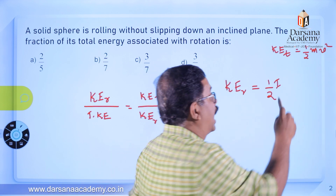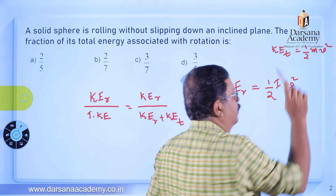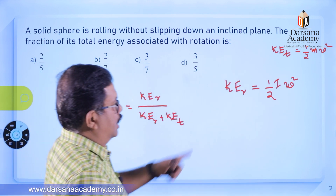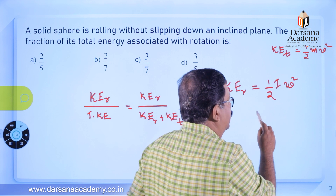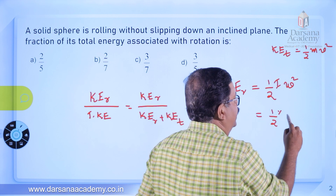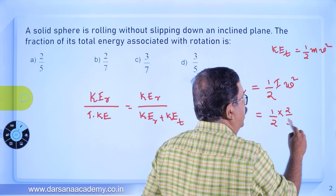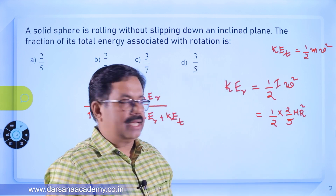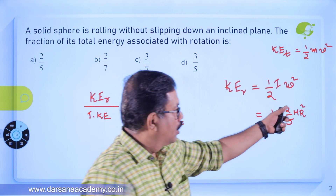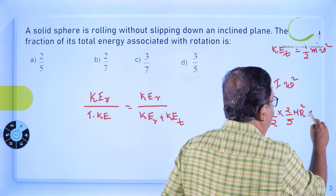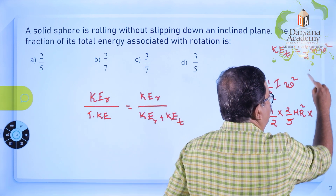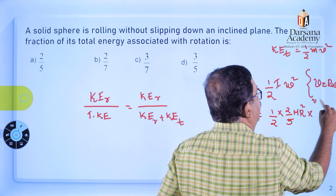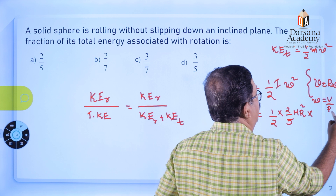To convert, replace mass with moment of inertia and velocity with angular velocity. For a solid sphere, the moment of inertia is I = (2/5) MR². Using the relation v = Rω, so ω = v/R, and substituting, the R² cancels out.